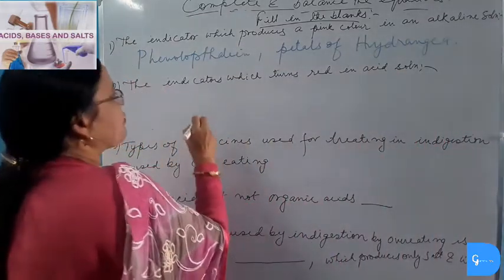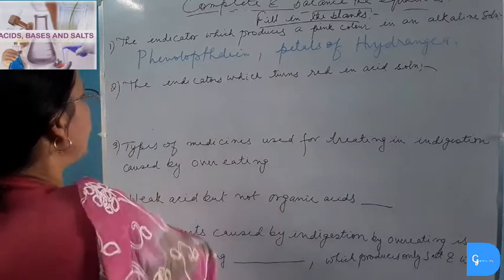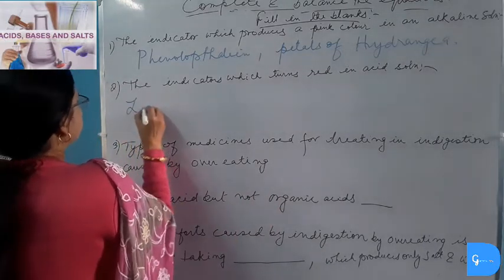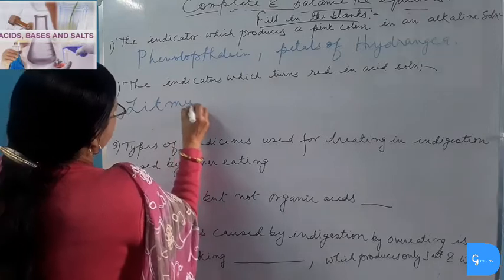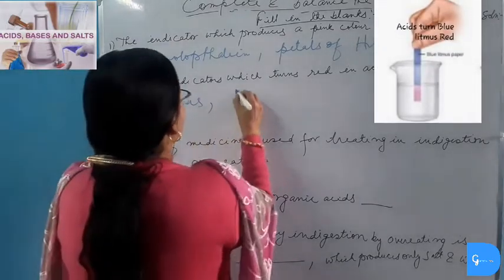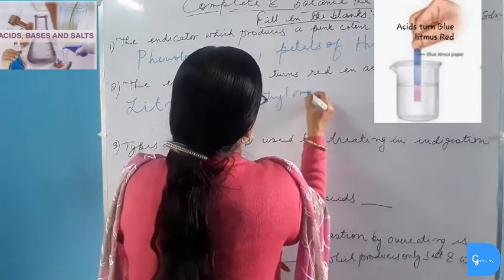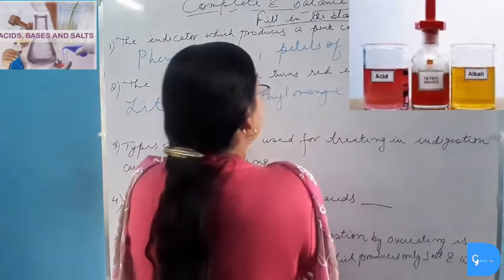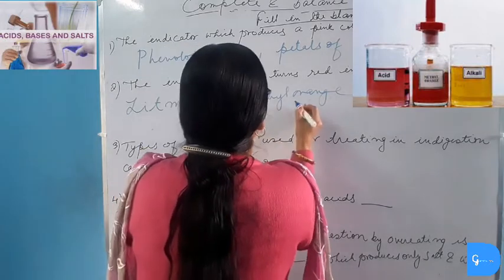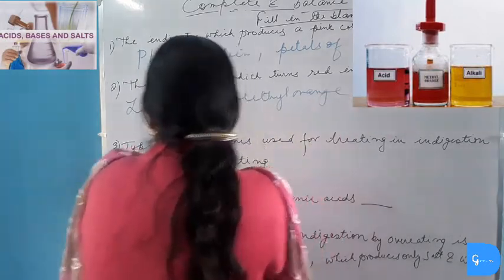The indicator which turns red in acid solution: first, Litmus — blue litmus turns red in acid. And Methyl Orange also becomes red in acidic solution. Methyl Orange's neutral color is orange, but it becomes red in acidic solution.